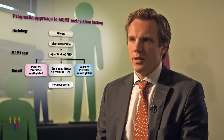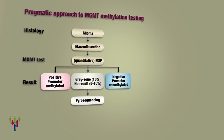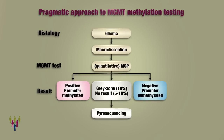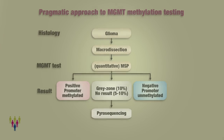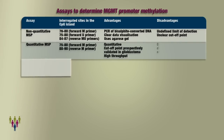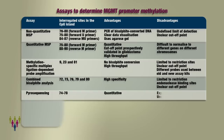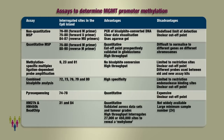These markers should be tested at initial diagnosis, from the tumour tissue obtained at the first operation. There are issues with the methods you should use; in some cases there is no consensus on what is the best method. For example, with MGMT testing you have to be very careful what method you use, because there are technical challenges and some methods do not have optimal reproducibility.